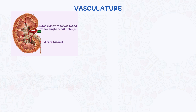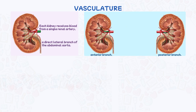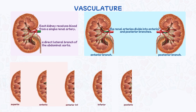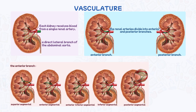The renal artery is a direct lateral branch of the abdominal aorta. Upon entering the kidney through the hilum, the renal arteries divide into anterior and posterior branches. The posterior branch supplies the posterior part of the kidney, while the anterior branch splits into five segmental arteries, each supplying a different renal segment.